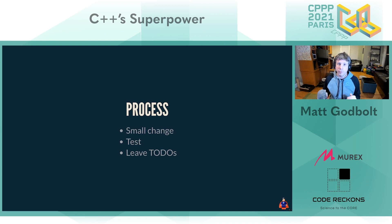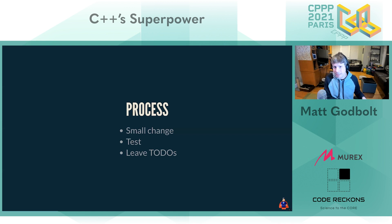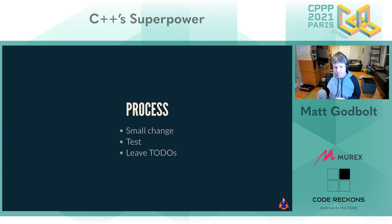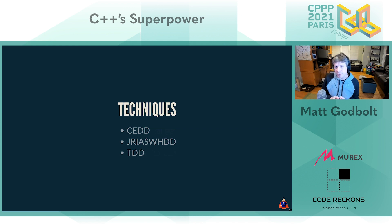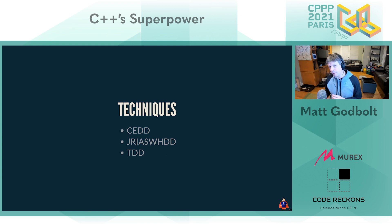Where I discover parts of the codebase that could be improved but not as part of the current change, I put a TODO in the code and I'm principled about those TODOs — we definitely come back to them later. It gives you permission to make a small change without freaking out and worrying you'll forget other important changes. I'm going to use three different techniques: Test-Driven Development (TDD), CEDD, and DRASWOOD — two new techniques you're probably already using but didn't know had names.